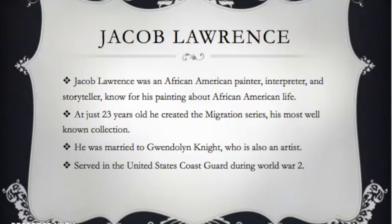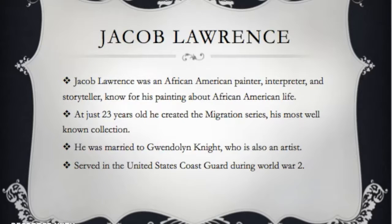Jacob Lawrence was an African-American painter, interpreter, and storyteller, and he was best known for his paintings about African-American life. At just 23 years old, he created the Migration Series, which was a very well-known collection about the migration of African-Americans from the South to the North. He married Gwendolyn Knight, who he was with for his entire life.